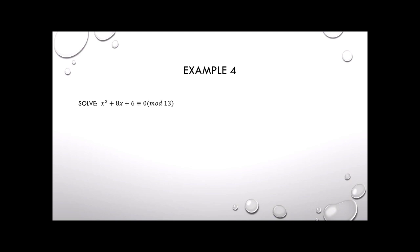Example 4 — we could try to factor this one, but I'll show completing the square. First, move the constant to the right-hand side by subtracting 6 from both sides, mod 13. We want to add a constant to the left-hand side that makes it a perfect square. Since the x squared coefficient is 1, we take half the x coefficient.